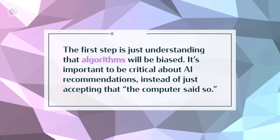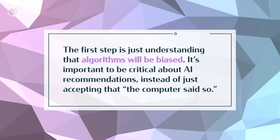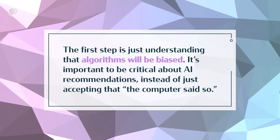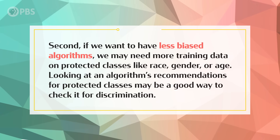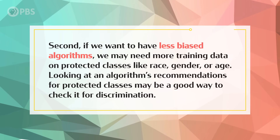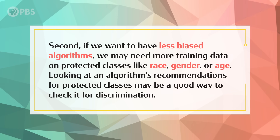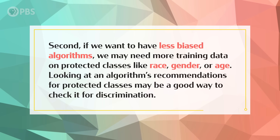Monitoring AI for bias and discrimination sounds like a huge responsibility. So how can we do it? The first step is just understanding that algorithms will be biased. It's important to be critical about AI recommendations instead of just accepting that the computer said so. This is why transparency in algorithms is so important — the ability to examine inputs and outputs to understand why an algorithm is giving certain recommendations. But that's easier said than done when it comes to algorithms like deep learning methods, where hidden layers can be really tricky to interpret. Second, if we want to have less biased algorithms, we may need more training data on protected classes like race, gender, or age. Looking at an algorithm's recommendations for protected classes may be a good way to check it for discrimination.